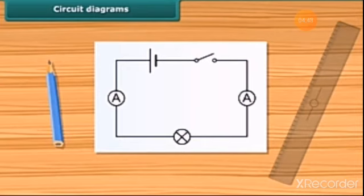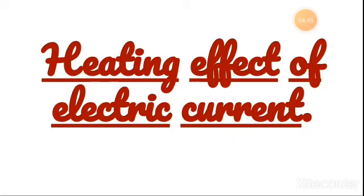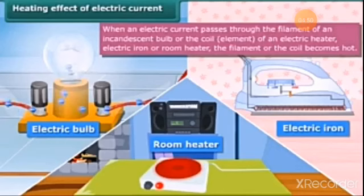Our next topic is heating effect of electric current. Students, when an electric current passes through a metallic wire such as a filament of a bulb or a coil, a coil of an electric heater, geyser, electric iron or room heater, the coil becomes hot and glows. This is known as heating effect of electric current. In this condition, they radiate heat and light.